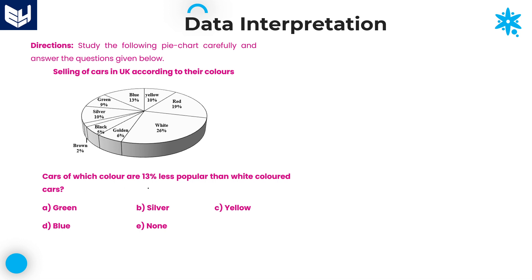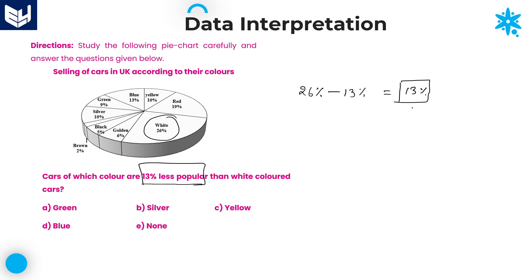Next question: cars of which color are 13% less popular than white color? White color is 26%, and we subtract 13: 26 minus 13 equals 13%. 13% belongs to blue color. Blue color cars are 13% less popular than white color. Option D is the right answer.